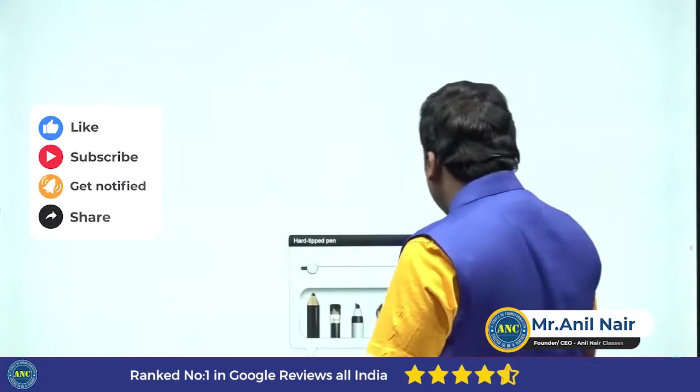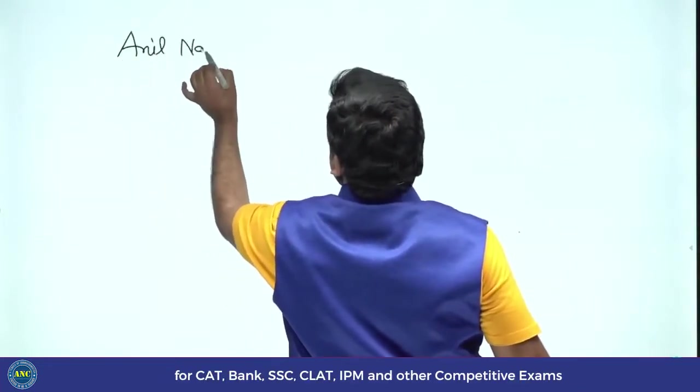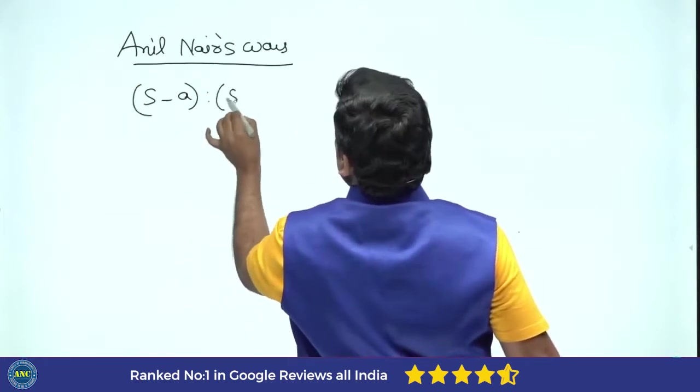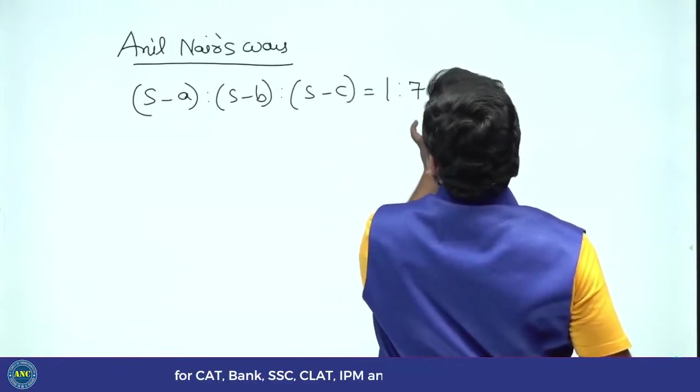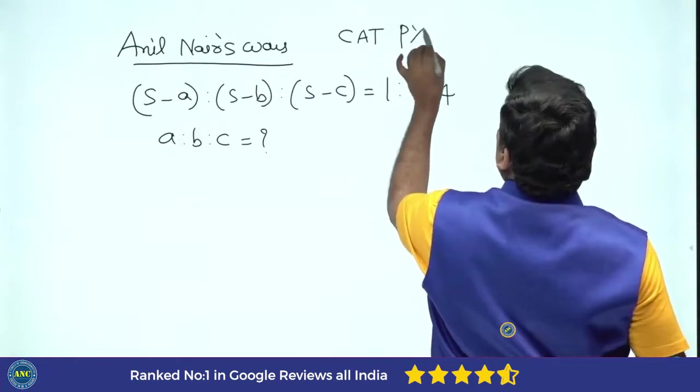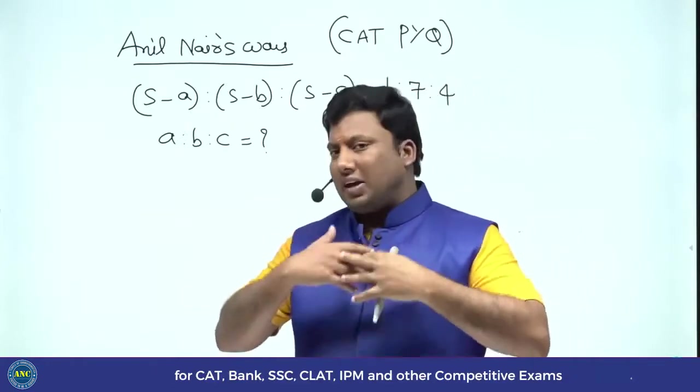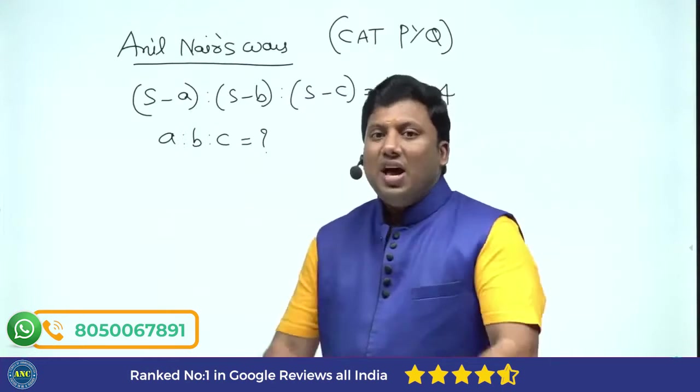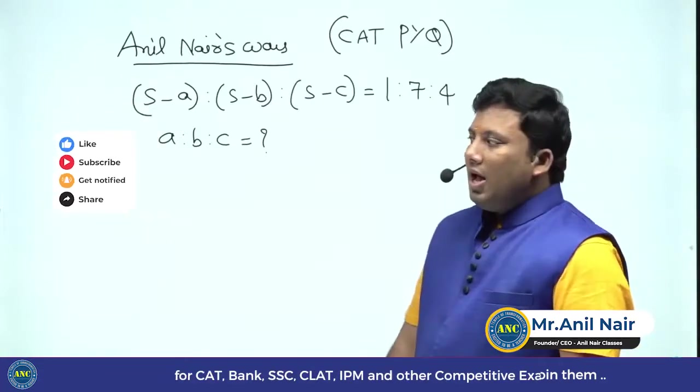If Anil Nair is solving this question, Anil Nair's way, it is a logical way to solve the question. What is the question? (S-A) : (S-B) : (S-C) is equivalent to 1 : 7 : 4. A : B : C = ? You will understand the beauty of preparing for CAT examination. CAT exam is not a difficult examination, it is a different examination. Because CAT is Asia's toughest examination. Maximum number of questions are logical questions.